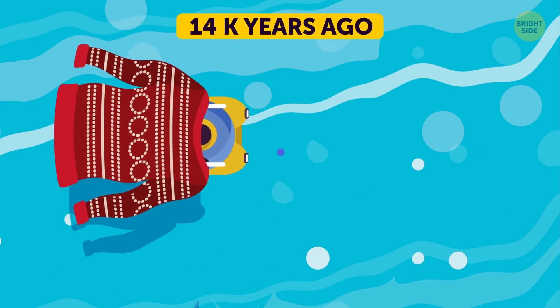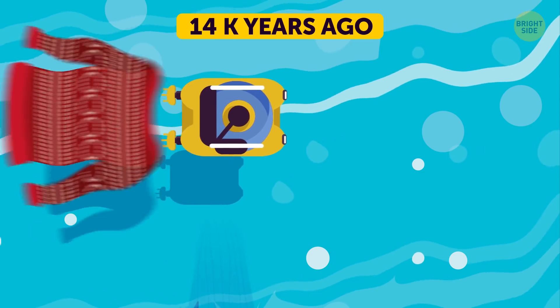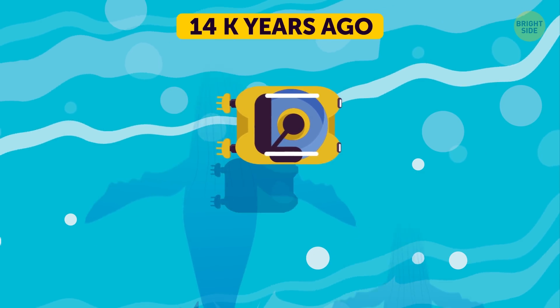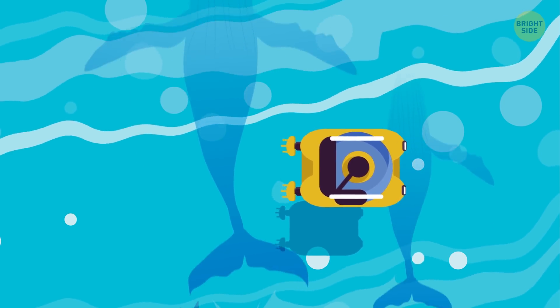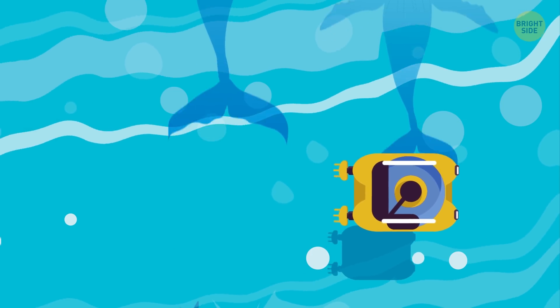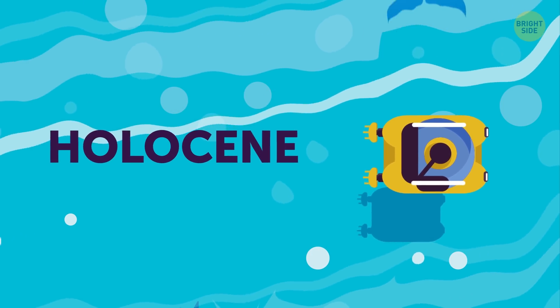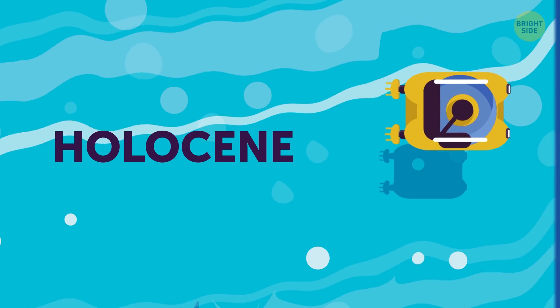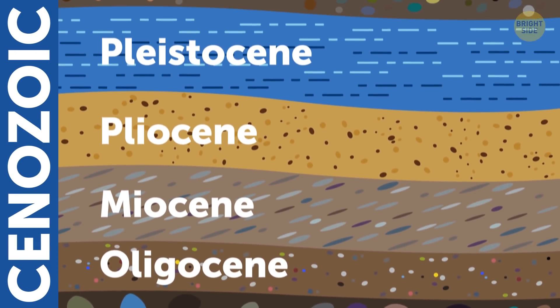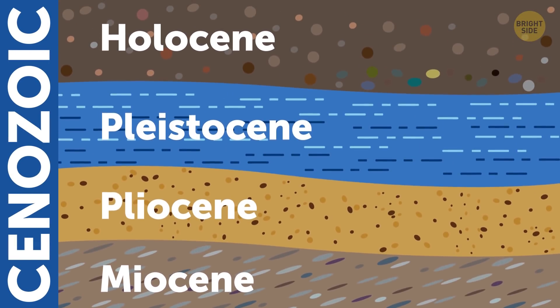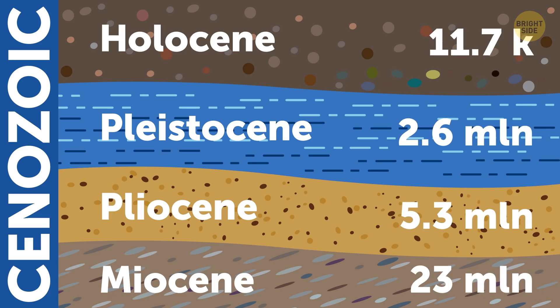Another 12,000 years go by, and I no longer need a sweater. Temperatures in the northern Atlantic region rise to pretty much today's levels. It's a warm and humid period before the start of the Holocene. Now, the Holocene is the name of the current geological epoch. It started 11,700 years ago.